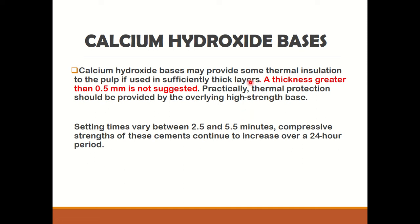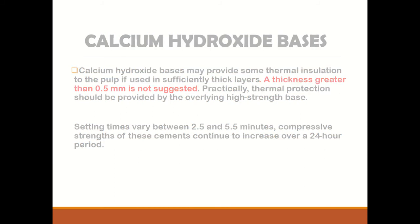When calcium hydroxide is used as a base, it provides some thermal insulation to the pulp if used in a sufficiently thick layer. However, a thickness of greater than 0.5 mm is not suggested, so practically thermal protection should be provided by the overlying high-strength bases. The setting time of calcium hydroxide bases varies between 2.5 to 5.5 minutes and the compressive strength continues to increase over a 24-hour period.